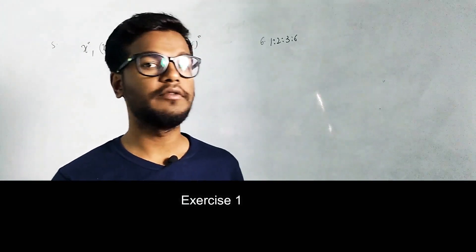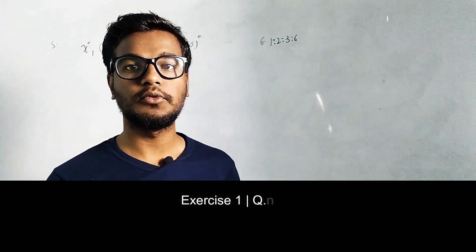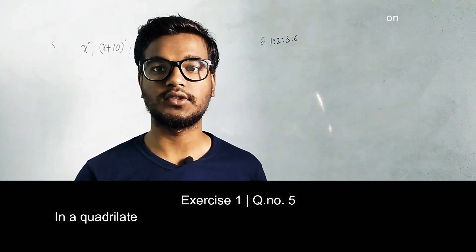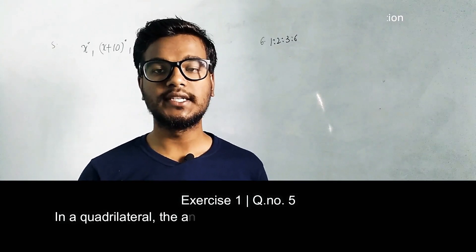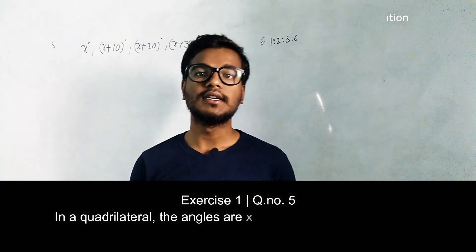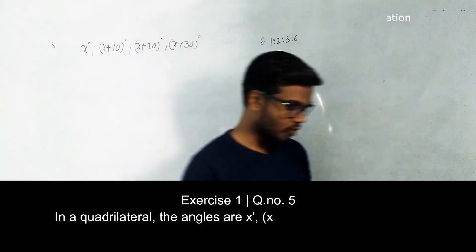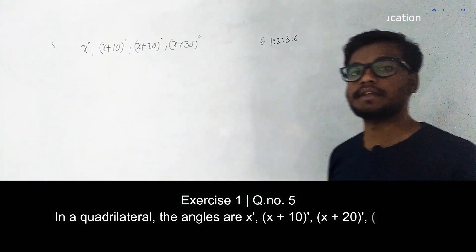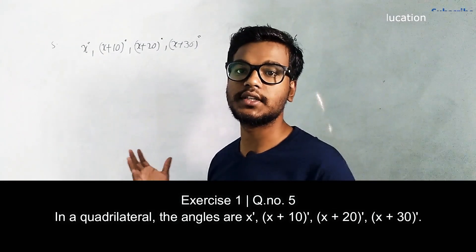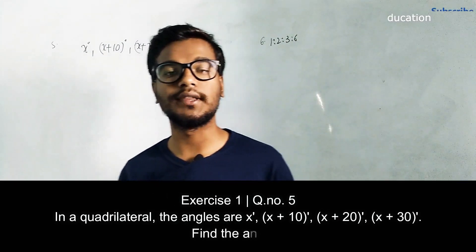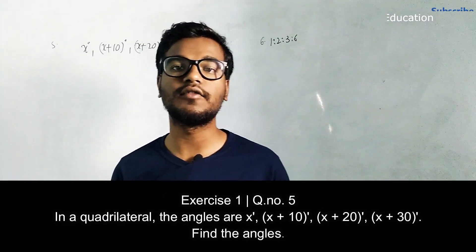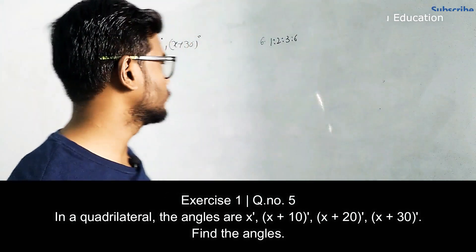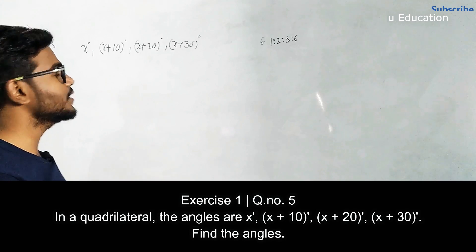Hello viewers, in this module we are going to discuss the solutions for the fifth and sixth exercise questions on quadrilaterals. They are given in the format where angles are expressed as x degrees, x plus some value, and so on. We have to find the angles in the given quadrilateral.